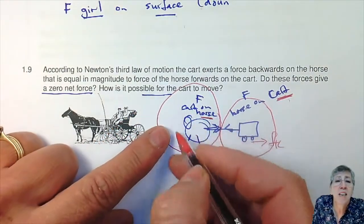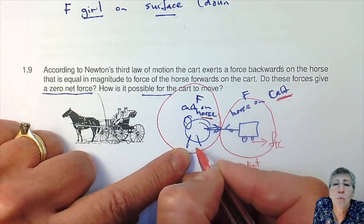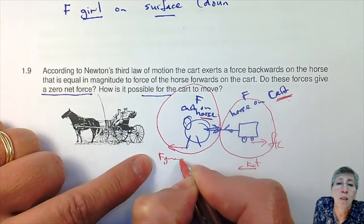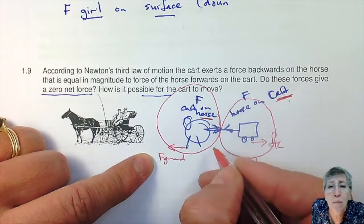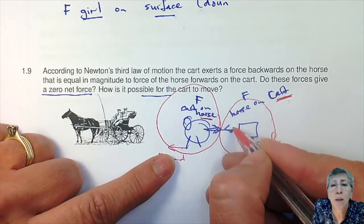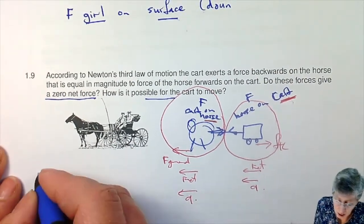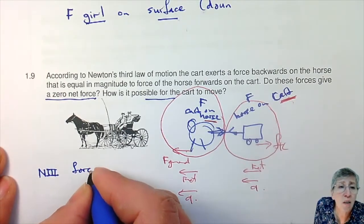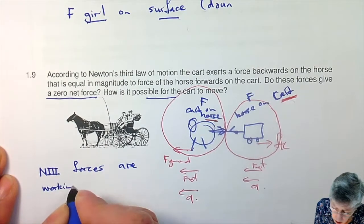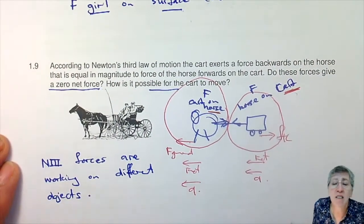The same logic applies to the horse. The cart is pulling it back, but the horse's hooves push backwards against the ground, so the ground exerts a forward force on the hooves — ground on hooves, hooves on ground. The hooves push back and the ground pushes forward. As long as that forward ground force is bigger than the cart pulling back, the horse has a net force in the forward direction. Newton's 3rd force pairs act on different objects, so they can't cancel out — you never look at them together.